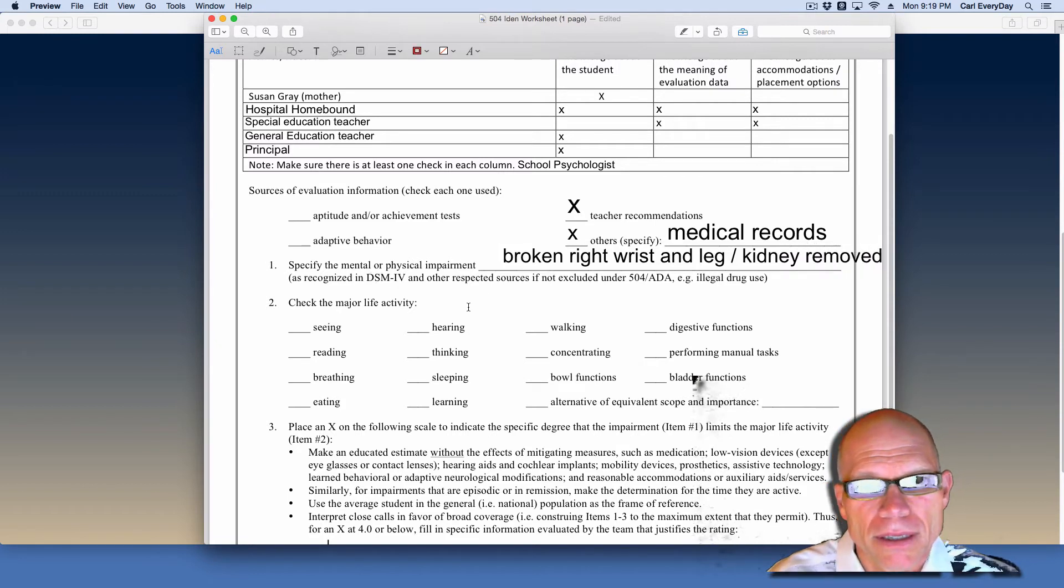Now we have to determine one or more major life activity that is impacted by this physical impairment. And I think it's pretty clear that for James it's got to be walking and performing manual tasks.